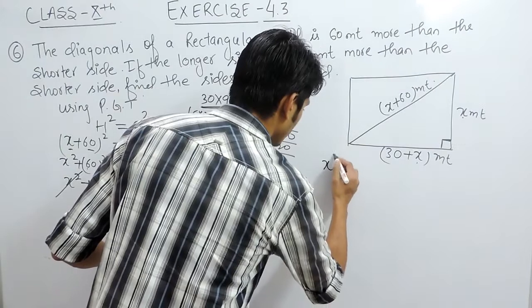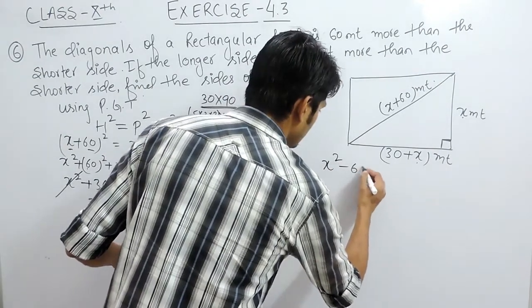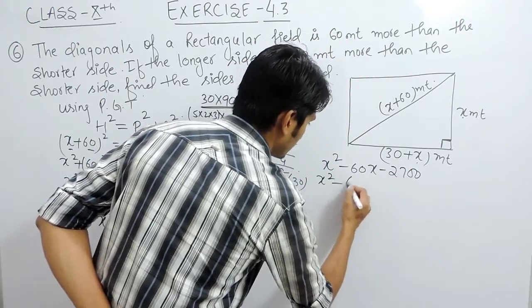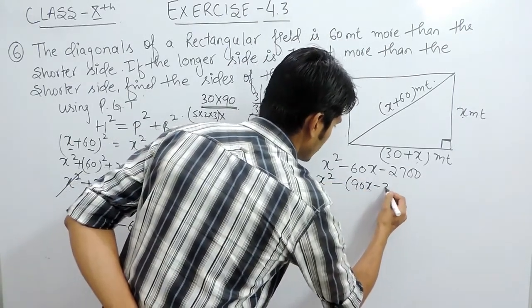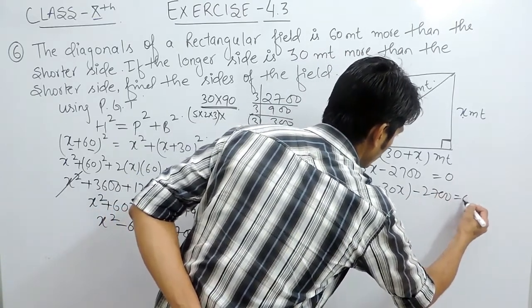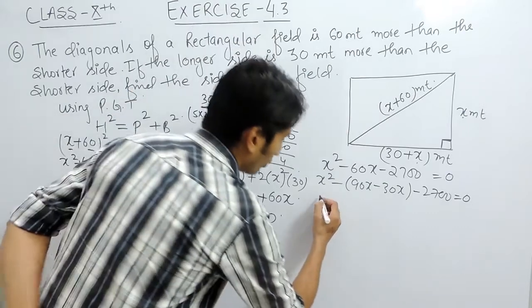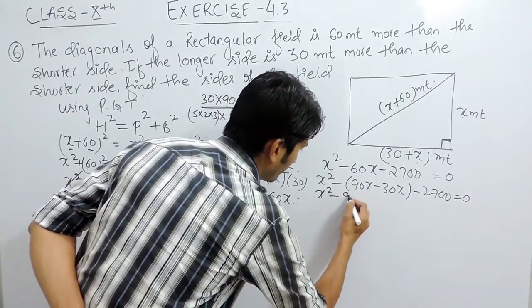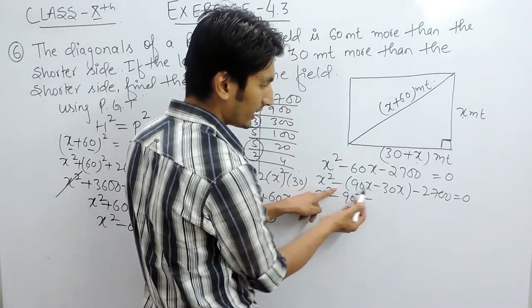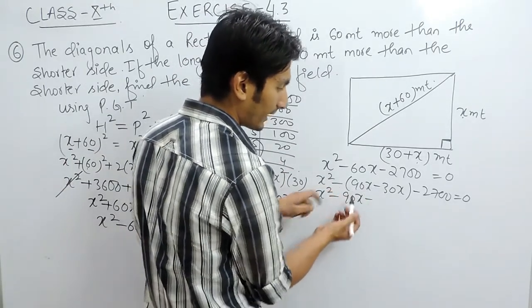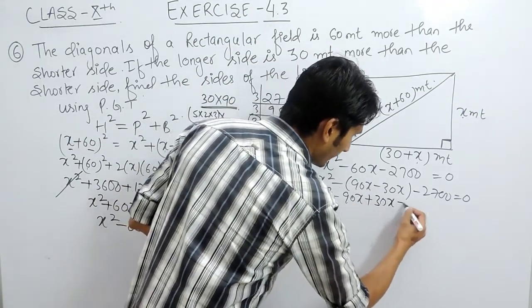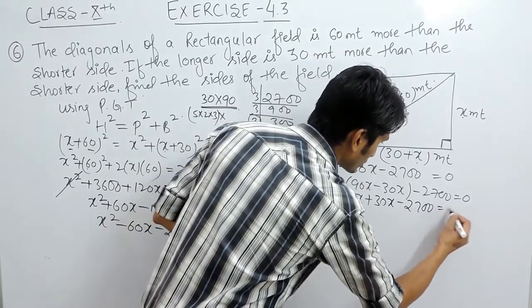So we can now solve the equation: x squared minus 60x minus 2700 equals 0. Splitting the middle term, this becomes x squared minus 90x plus 30x minus 2700 equals 0. Opening the brackets, we have x squared minus 90x, and since there is a negative sign outside the bracket both signs change inside, giving plus 30x plus 2700 equals 0.